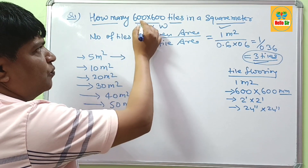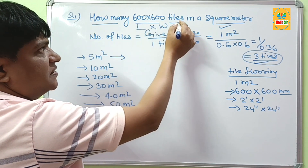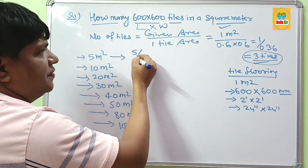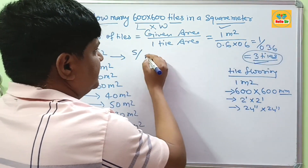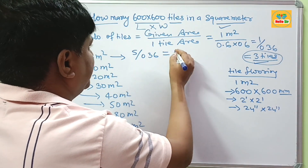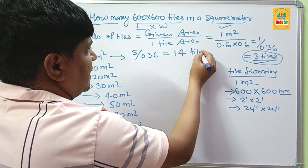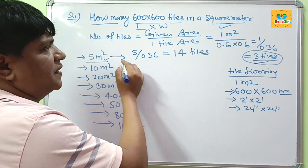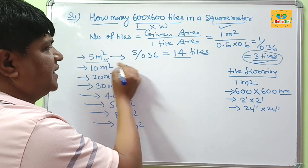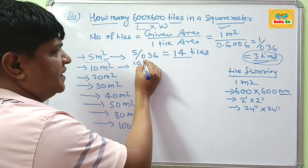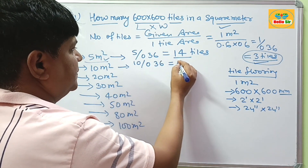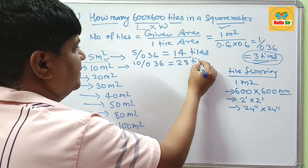For a 5 square meter area, how many 600x600 tiles will be required? The area is 5 divided by 0.36, which comes to about 14 tiles. So for 5 square meters you will need about 14 tiles. And if your tile project area is 10 square meters, then 10 divided by 0.36 comes to about 28 tiles.